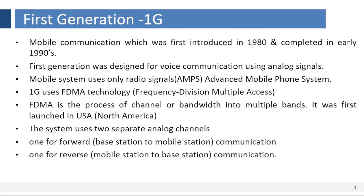As per the technology, we have different types of generations. Now let us learn what is 1G, means first generation. Mobile communication was first introduced in 1980 and completed in early 1990. The first generation was designed for voice communication using analog signals. Mobile systems use only radio signals. Advanced Mobile Phone System is an analog cellular phone system using FDMA technology. First generation uses FDMA technology — frequency division multiple access.